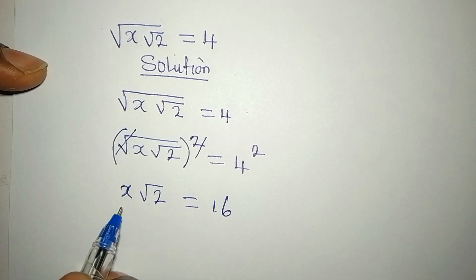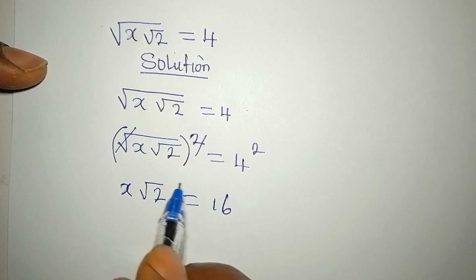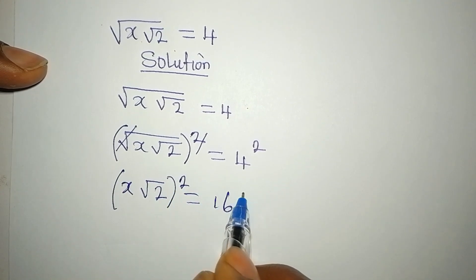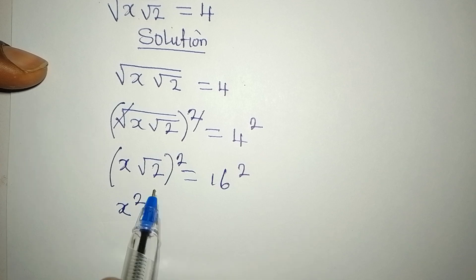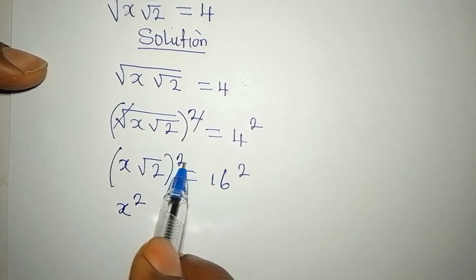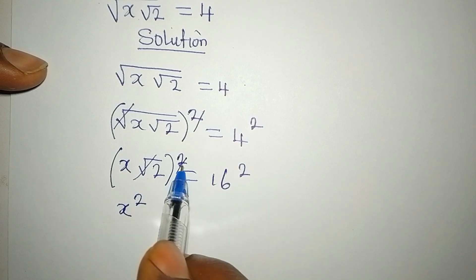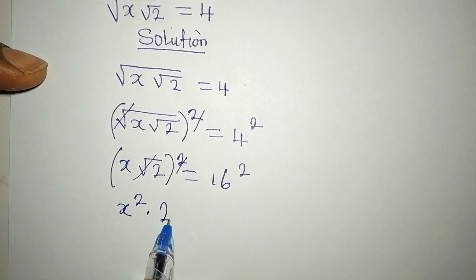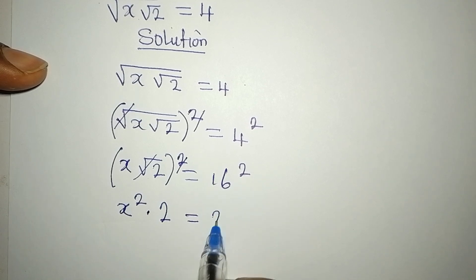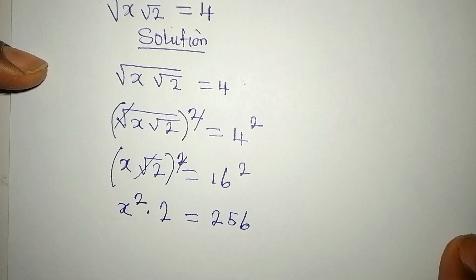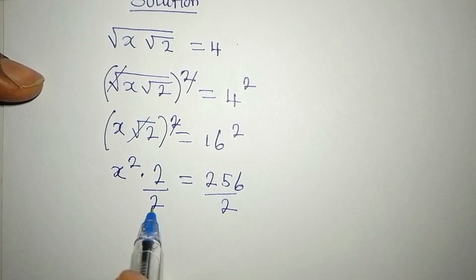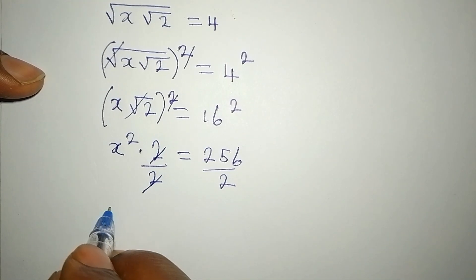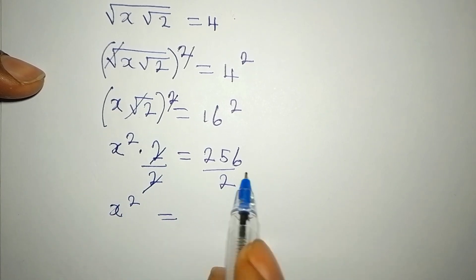Now we are looking for the value of x, so we are going to square this side as well. If we square the left side, we also square the right side. We get x squared, and root 2 squared gives us 2, so we have x squared times 2 equal to 256. Dividing both sides by 2, x squared equals 256 divided by 2, which is 128.